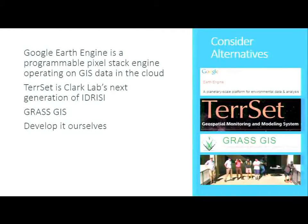Google Earth Engine was a showstopper for us because you can't do routing — you can do pixel stack operations but you can't look at your neighbors, due to the map-reduce algorithm on the back end. TerrSet we don't own. GRASS was hard to embed. So instead, we developed our own GIS engine and tried all these approaches in parallel.